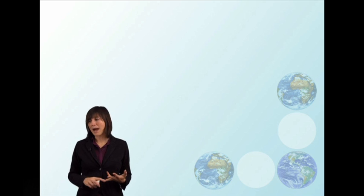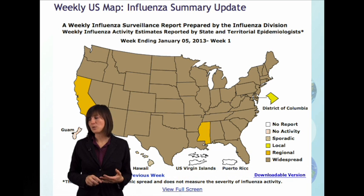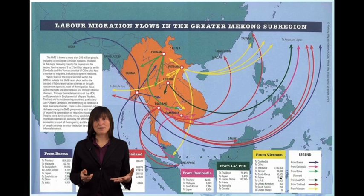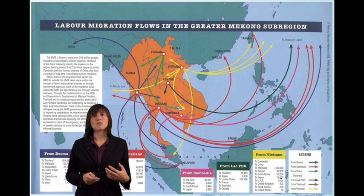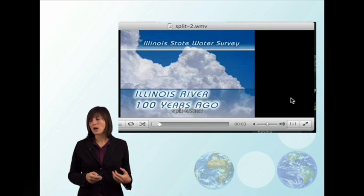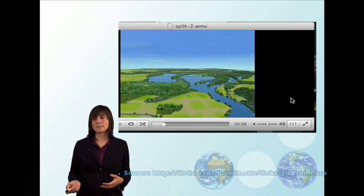Once geographers have gathered information, they can organize it in a variety of ways. One key method is visually organizing information into maps, geographic information systems like you heard about in the video from the first week, graphs, and other types of visual representations. Geographers also use a lot of written forms of representation — writing up interviews, reports, articles, things like that.